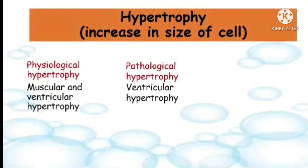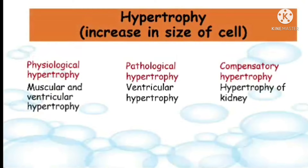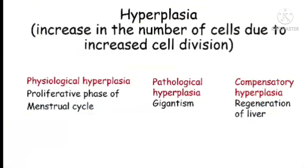The second type is pathological hypertrophy, where there is an increase in the size of the cell in response to pathological changes. The example is ventricular hypertrophy in response to high blood pressure. The third is compensatory hypertrophy, which includes an increase in the size of the cells in order to compensate for the loss or dysfunction of another organ of the same type. The example is hypertrophy of the kidney when the other kidney fails to function properly.